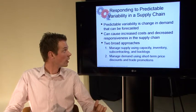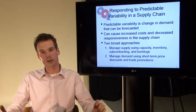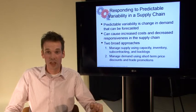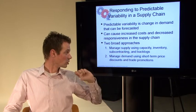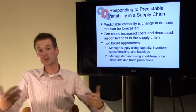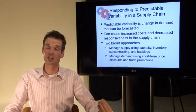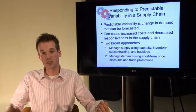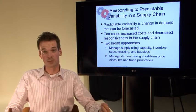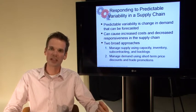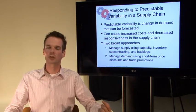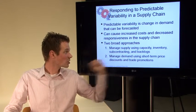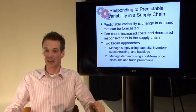When you want to respond to predictable variability in a supply chain, you broadly have two solutions. You can either manage your supply or manage your demand. If you want to manage your supply, you do that through the push system — which relates to Chapter 1 in the book by Sunil Chopra — and that uses capacity, inventory, subcontracting, and backlogs.